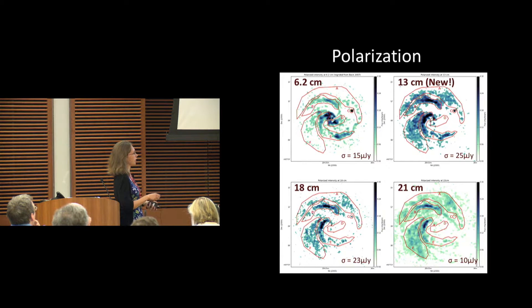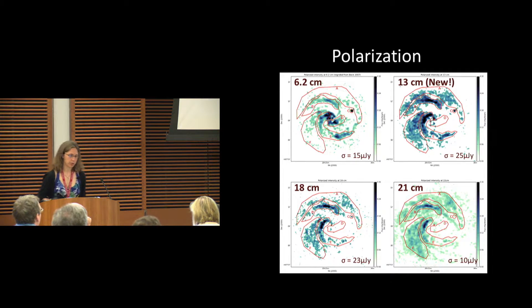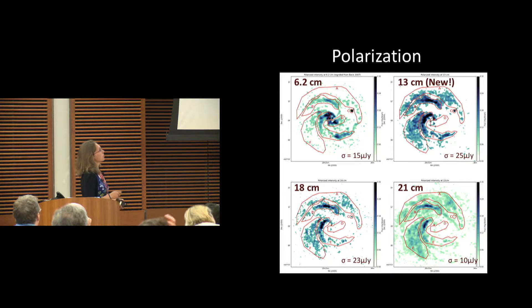We're also getting similar structure at the 13-centimeter as we get at the longer centimeter, at the longer wavelength, 20-centimeter, whereas we don't see that magnetic arm as prominently at the shorter wavelengths.